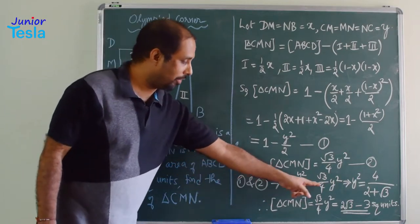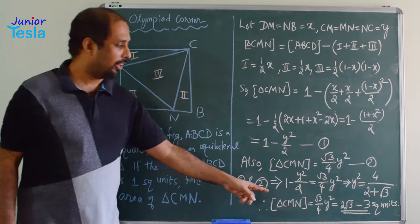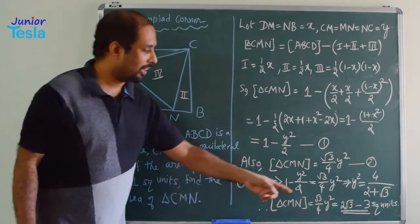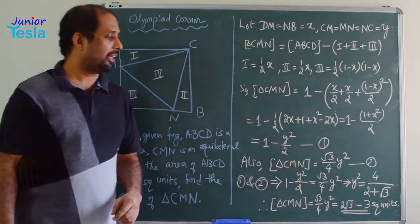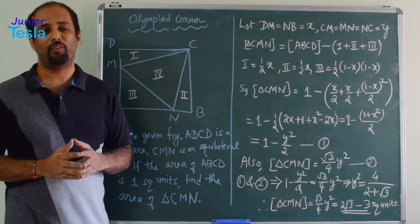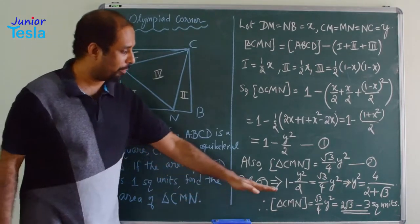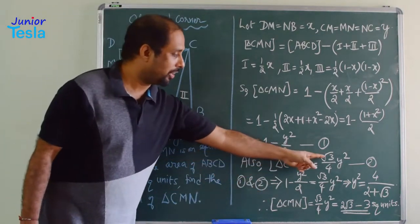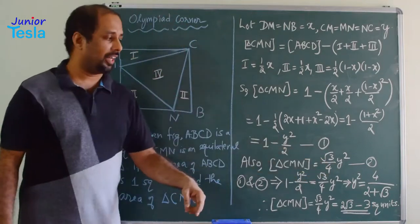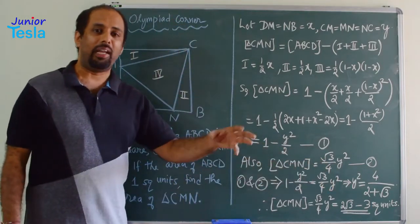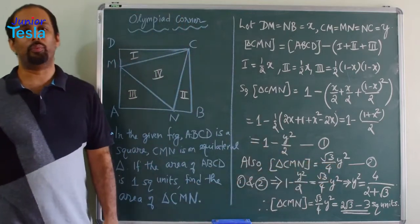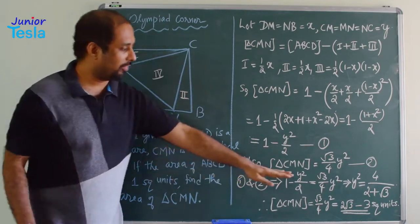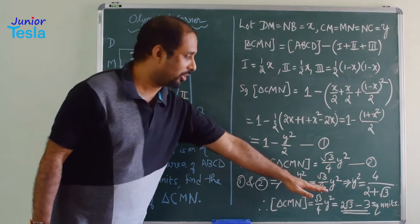From this equation, using simple algebra, we get the value of Y² = 4 / (2 + √3). Remember, we need not find Y itself — we only need Y². Now we substitute directly: area of triangle CMN = (√3/4) × Y² = (√3/4) × 4/(2 + √3).